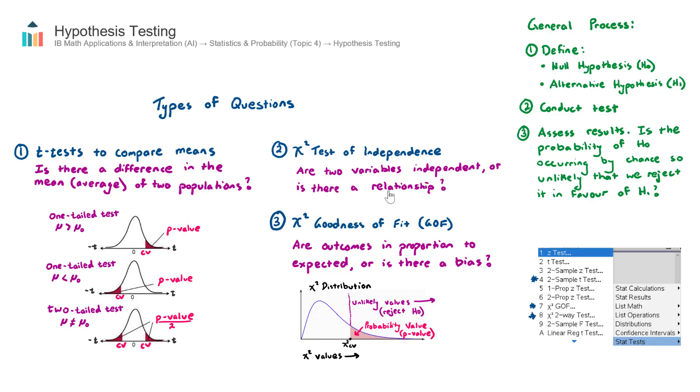And the example that I like to use is an ice cream shop. If we look at the temperature of the day and the number of ice creams sold, does the number of ice creams sold change depending on the temperature? Now, you kind of think that yes, it would. The hotter the day, the more ice creams sold, but we're not sure.